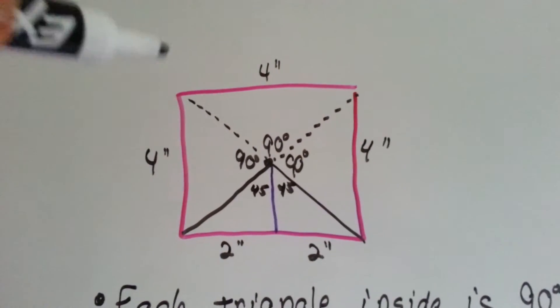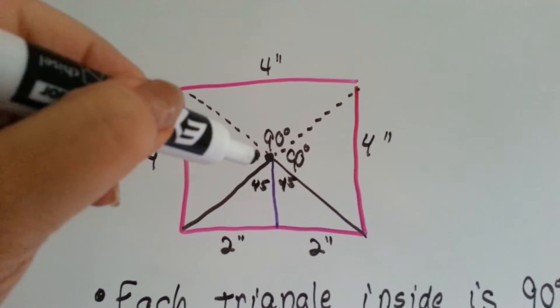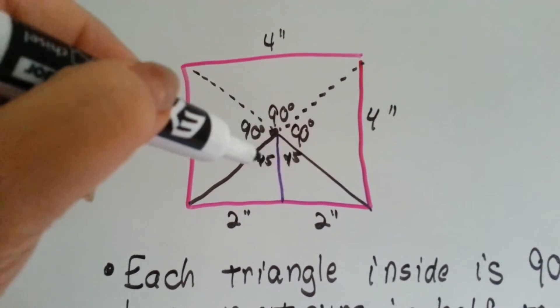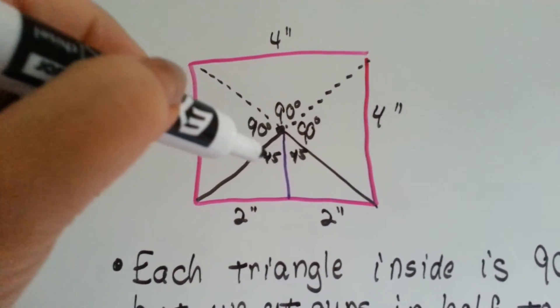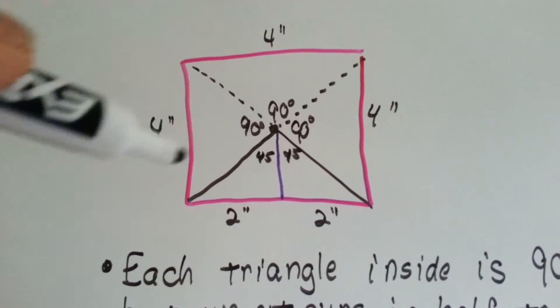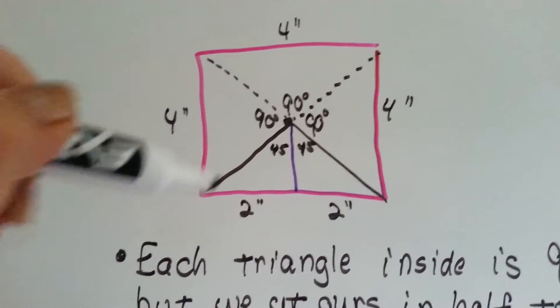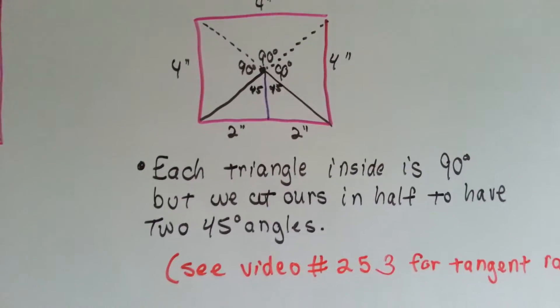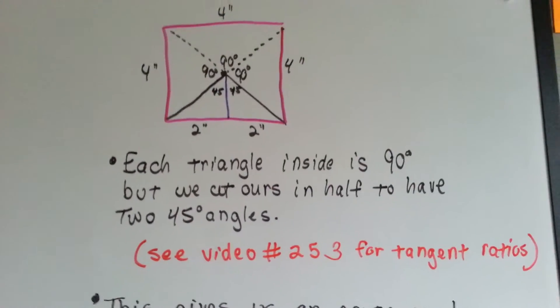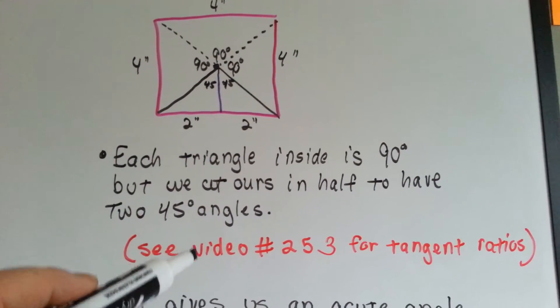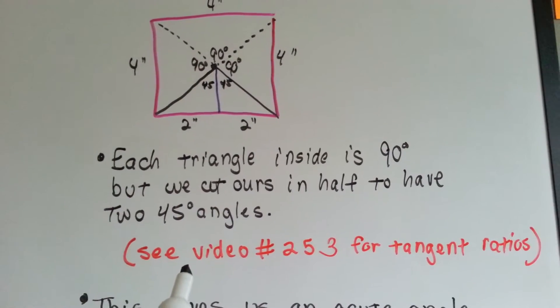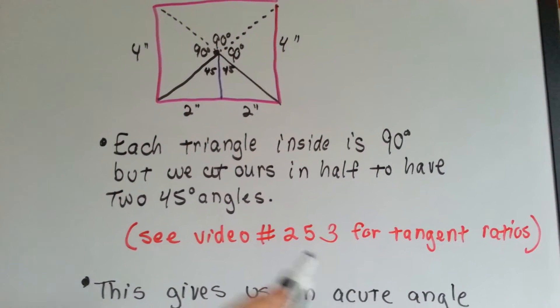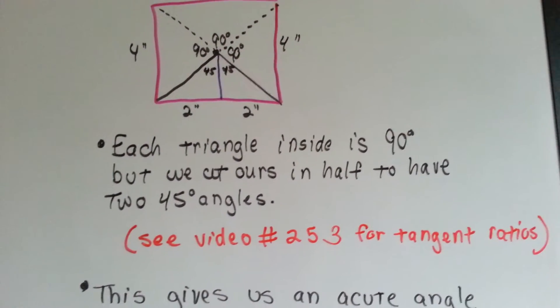That is going to give us a 90 degree angle here, here, here, but because we broke this one in half with the apothem, we've got a 45 degree angle here and a 45 degree angle here. So now, each triangle inside is 90 degrees and we have two 45 degree angles. Now, if you don't know what a tangent ratio is, you need to pause this video and watch my video number 253 for tangent ratios, because you may not understand what's about to happen.